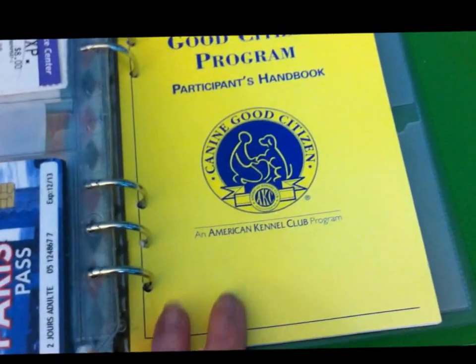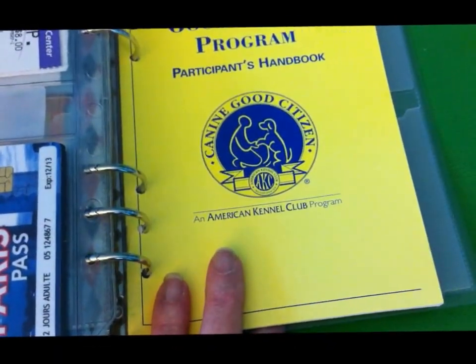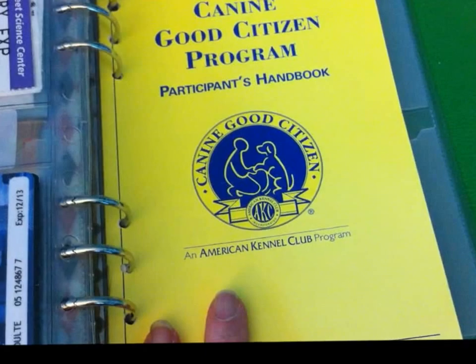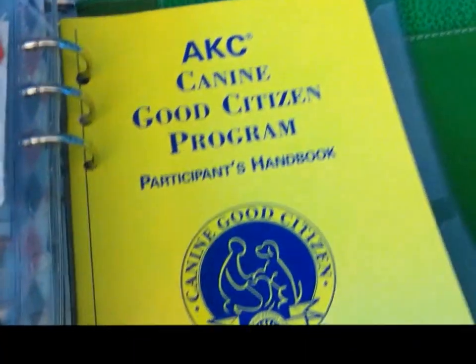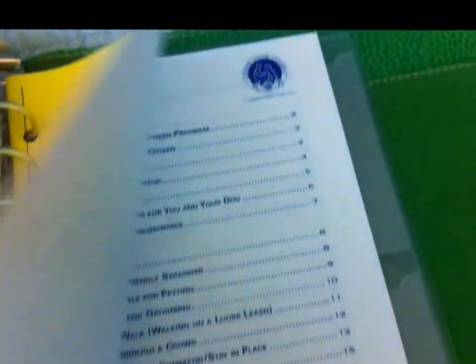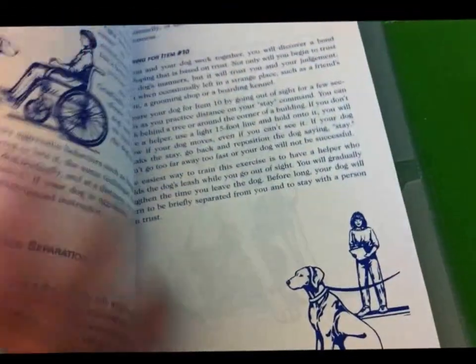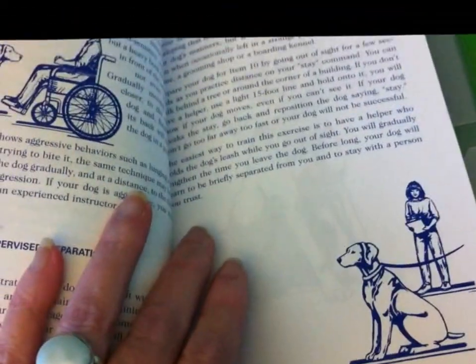And I want Ventura, Ventura took obedience level one and two, and I want him to take the Canine Good Citizen also. So I have the book here to try to keep in mind what he needs to learn.